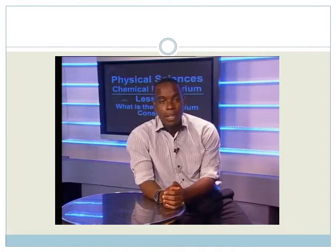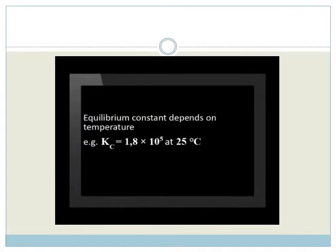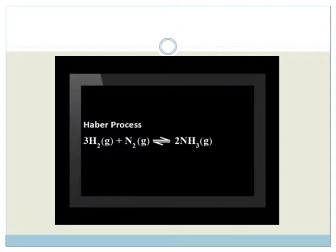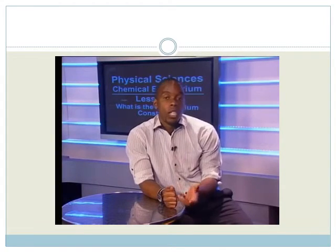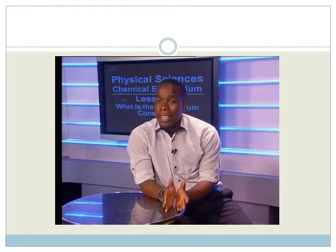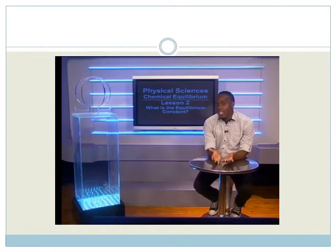Now we know how to calculate the equilibrium constant, but for a particular reaction, is it really a constant value under all circumstances? When values for the equilibrium constant are given in textbooks, it is often the value at 25 degrees Celsius. The equilibrium constant does change with temperature, so it is important to quote the temperature at the same time. In industry, reactions often take place at high temperatures in closed containers, such as in the Haber process for the production of ammonia. Chemists need to know the value of the equilibrium constant at the temperature of the reaction — in this case, 450 degrees Celsius. Please do look out for the second part of this lesson called Using the Equilibrium Constant, and there are questions for you to try in the chemical equilibrium task video.